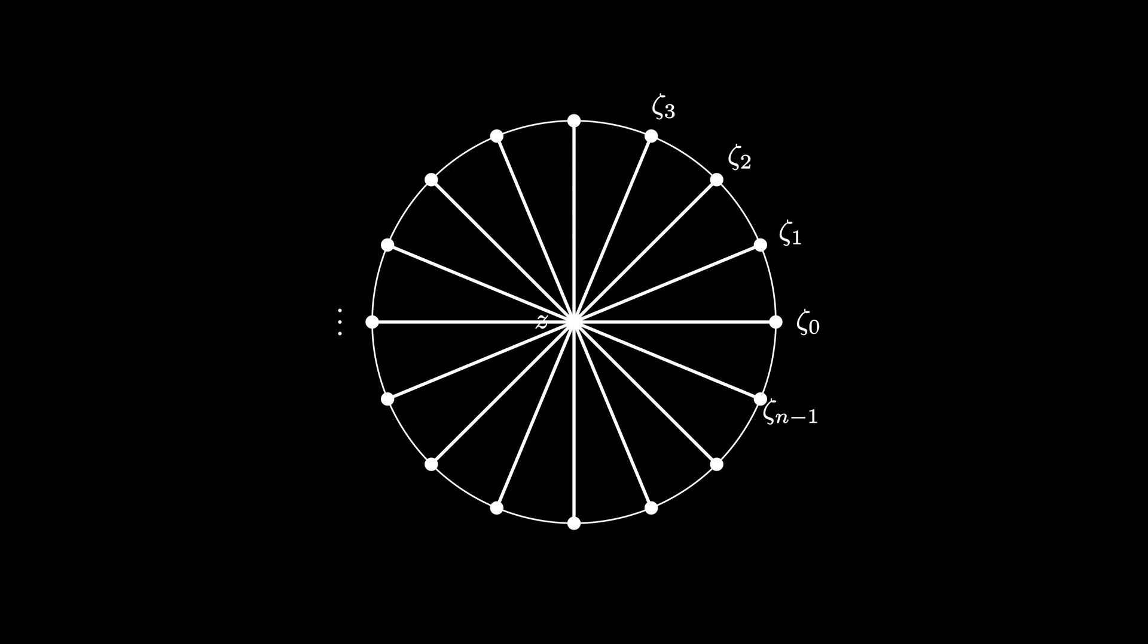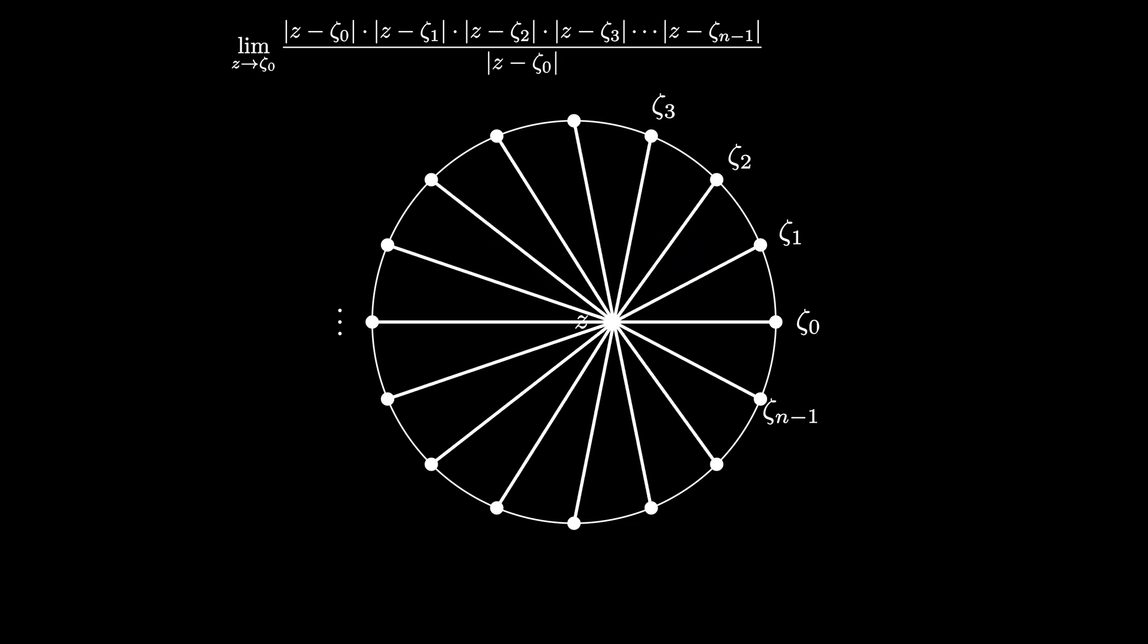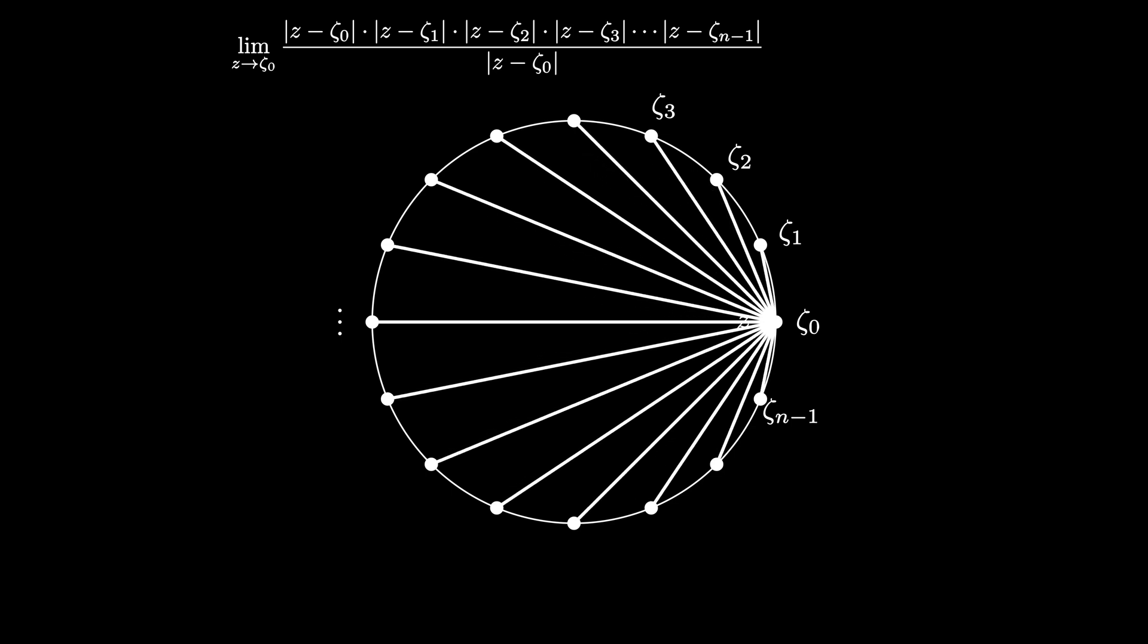Now we know exactly what to do for the general process when we have n points equally spaced around the unit circle. We assume the points are placed at the nth roots of unity, and then connect each of these nth roots of unity with the center point labeled z. We get this big product, which has one extra term than what we want, which is the term z - ζ₀. Now we compute the limit as z approaches ζ₀, and we get the product that we're interested in.